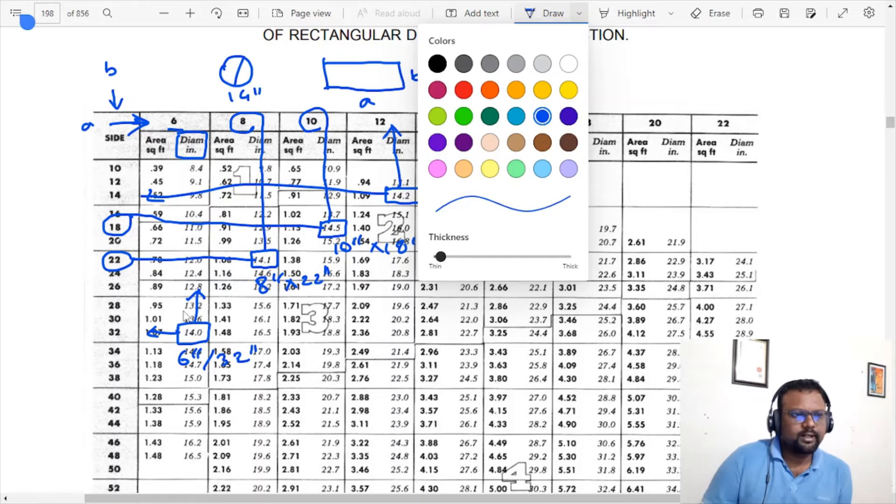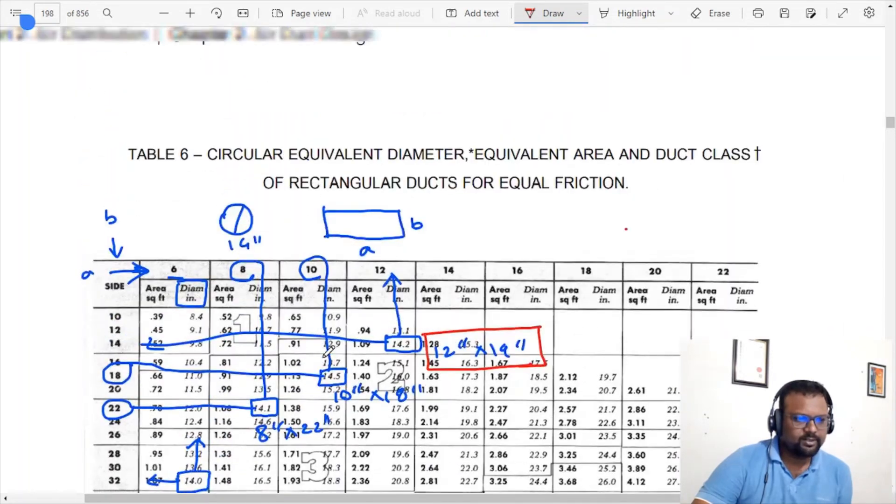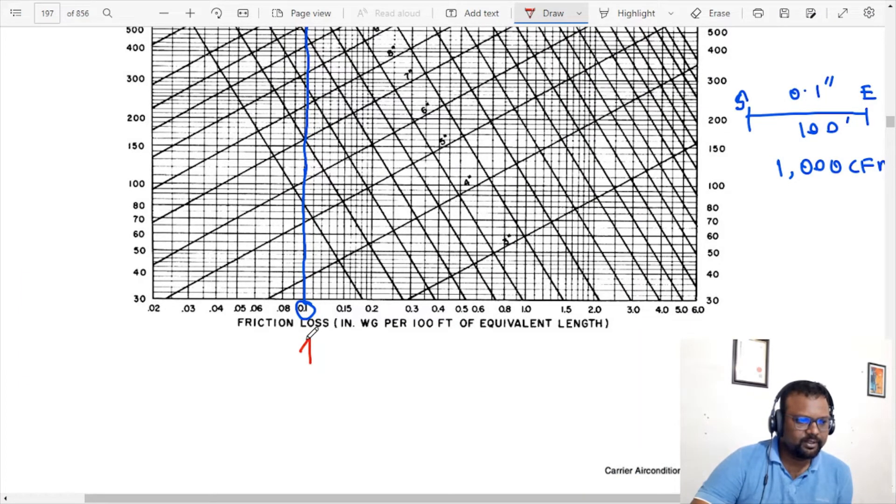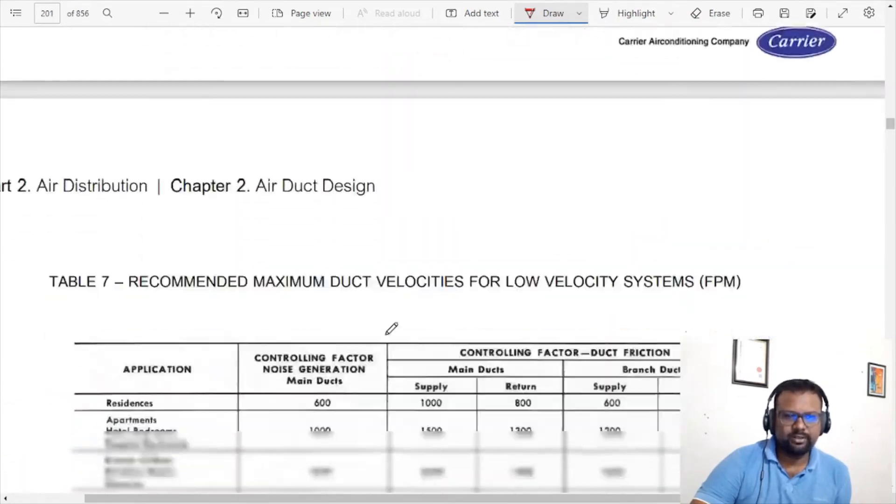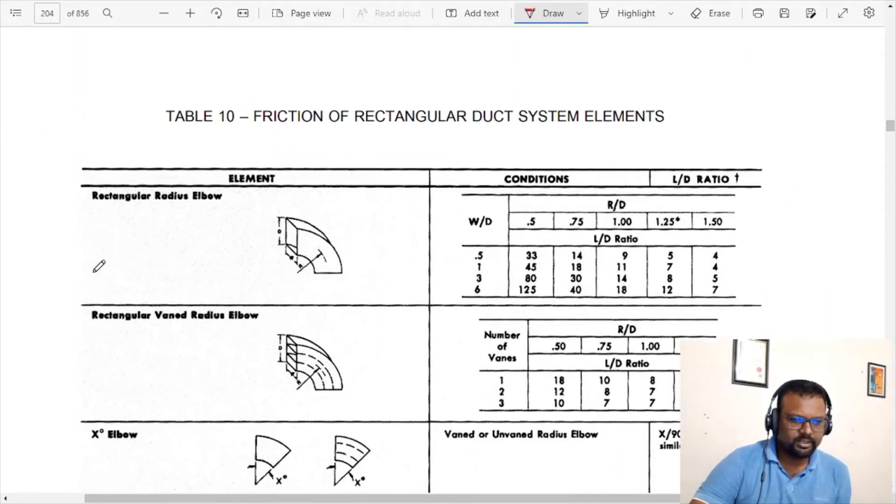Let's say I'm doing a different case scenario. I'm not going to consider the pressure loss in a straight duct. The pressure loss is 0.1 inch per 100 feet, but the elbow has a different friction loss. Let's consider this table.